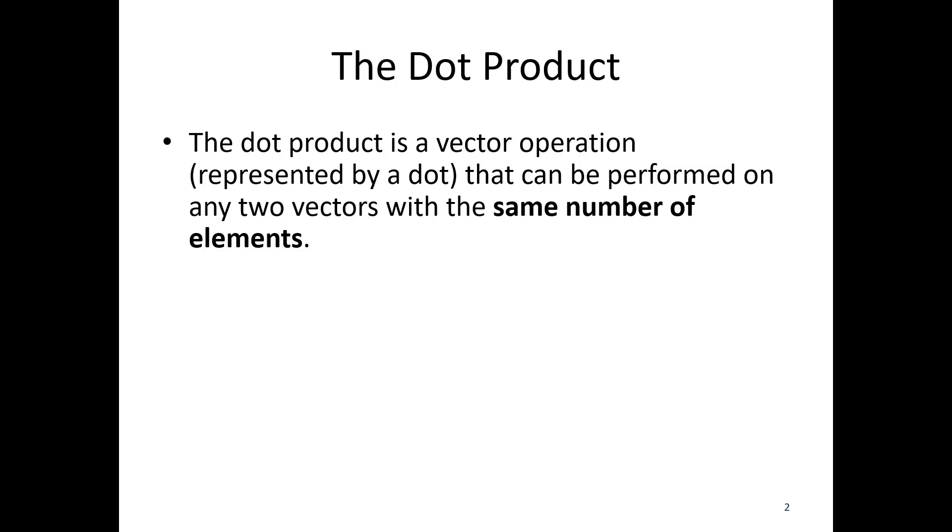So generally, in engineering, we're going to have vectors of two elements or vectors of three elements. We need to have the same number of elements in each of the two vectors that we are performing the dot product on.